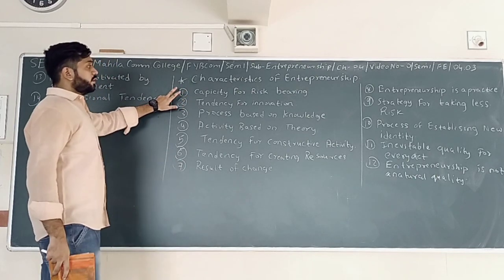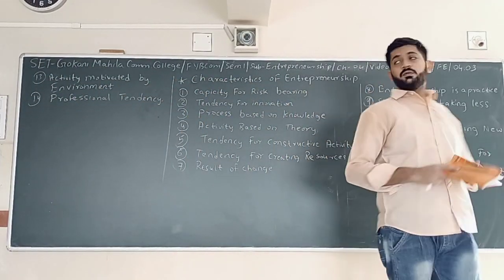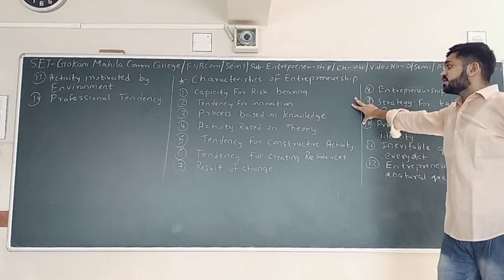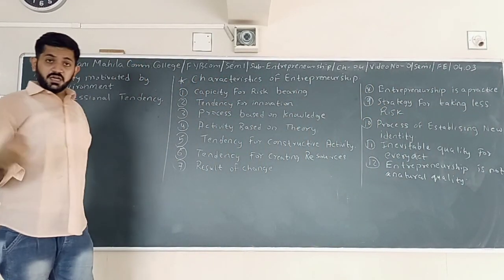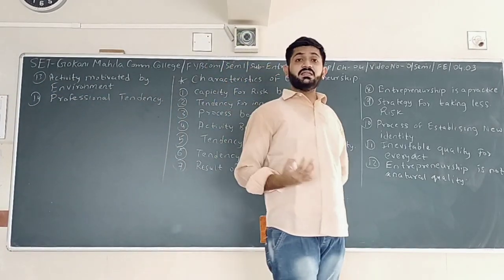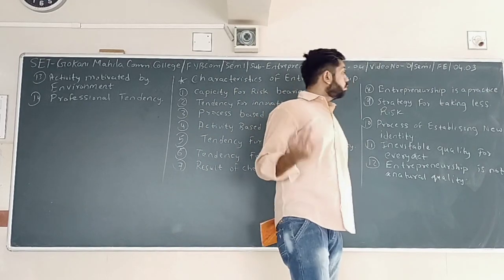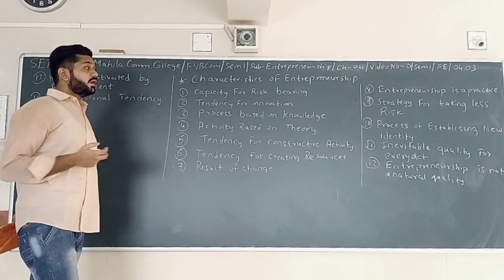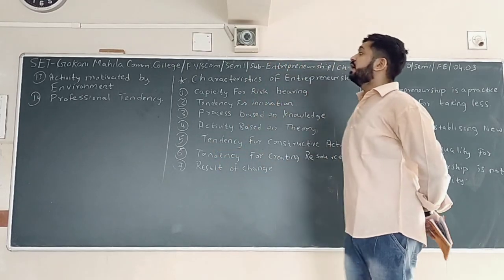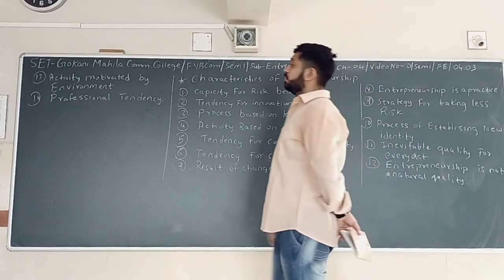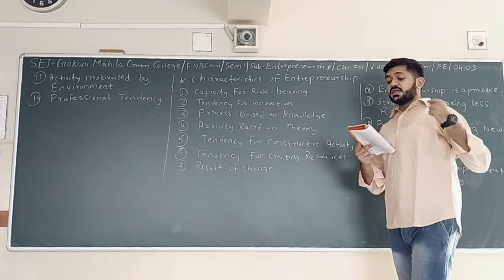So the first is capacity for risk bearing. Number two: tendency for innovation. Number three: process based on knowledge. Number four: activity based on hearing. Next: tendency for constructive activity. Next: tendency for creating resources. Seventh is result of changes. Eighth point is entrepreneurship is a practice. Nine point: strategy for taking less risk. Ten point: process of establishing a new identity. Eleven point: inevitable quality for every act. Twelve: entrepreneurship is not a natural quality. Thirteen: activity motivated by the environment.